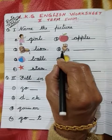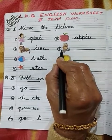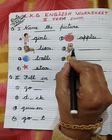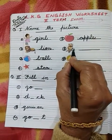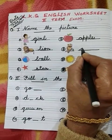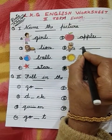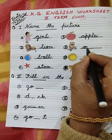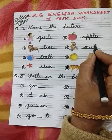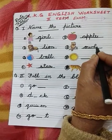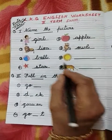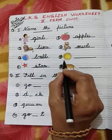Next, number 6. What is this? Very good — Owl! Spelling of owl: O-W-L. Owl. Number 7.